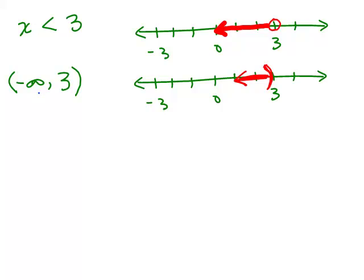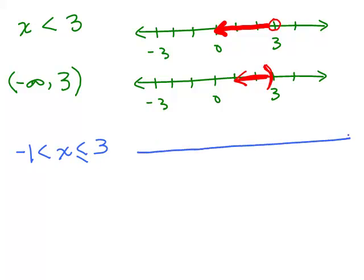The infinity symbol is a clue that something's different. But we are going to do problems where there will be two numbers, and it really does look like an ordered pair even though it's not. For example, what if x is between negative 1 and positive 3? This is read: negative 1 is less than x is less than or equal to 3.